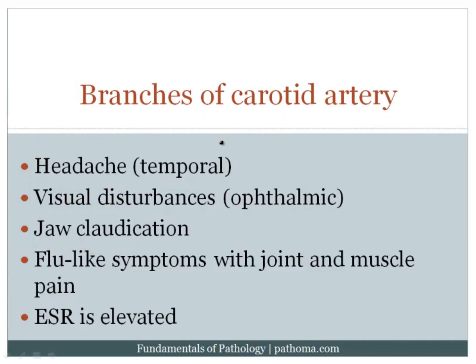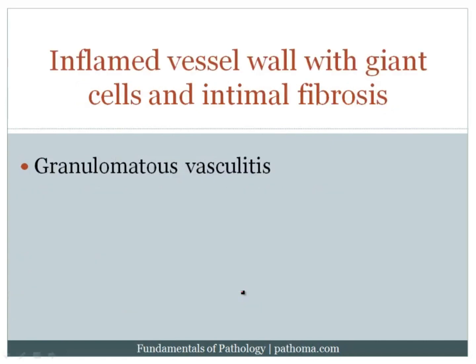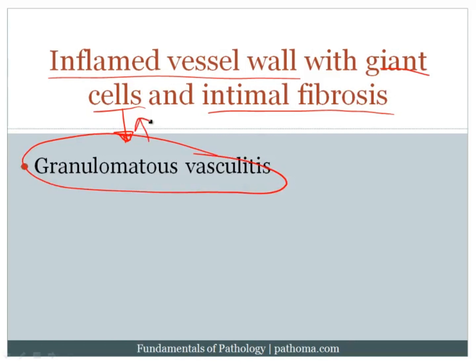Also present in these patients can be flu-like symptoms with joint and muscle pain, classically called polymyalgia rheumatica, present in a subset of patients. The ESR is classically elevated, often greater than 100. On biopsy, we see an inflamed vessel wall with giant cells due to granulomatous inflammation, and intimal fibrosis from the healing response. This is a granulomatous vasculitis with giant cells — the name temporal giant cell arteritis helps you remember that.